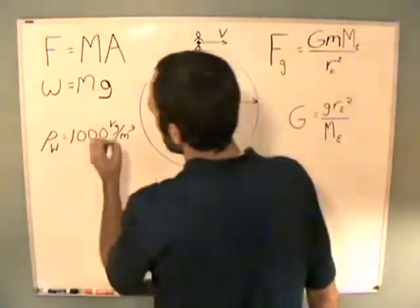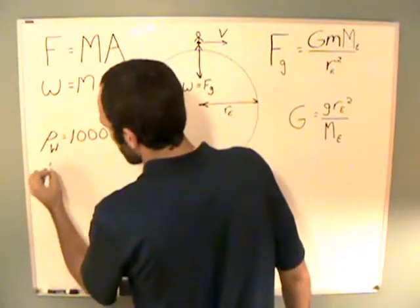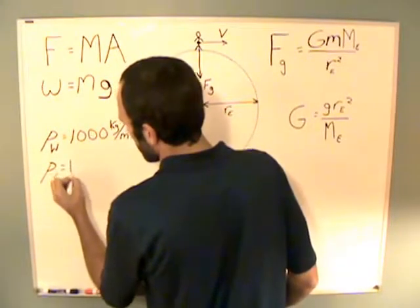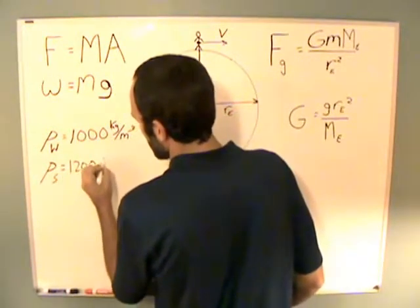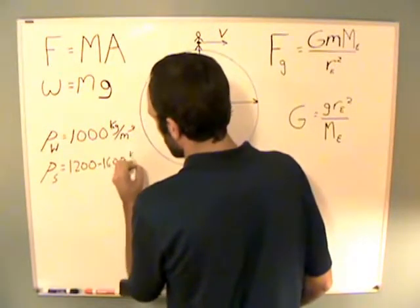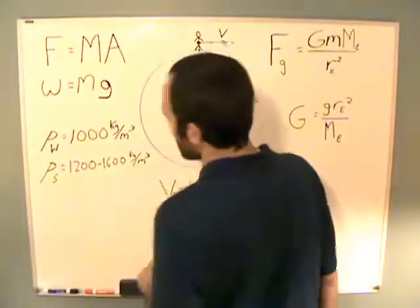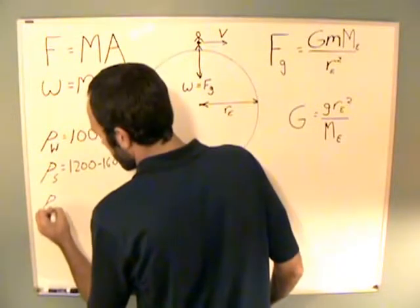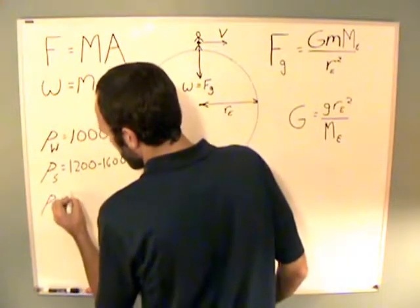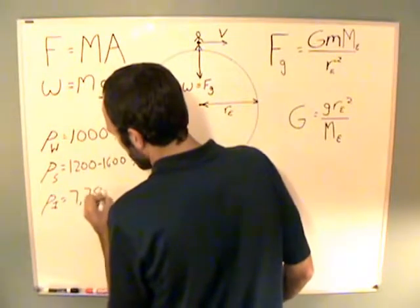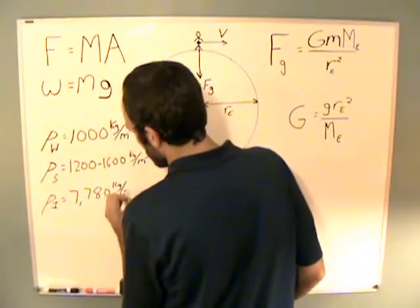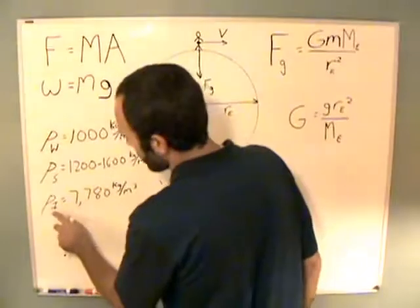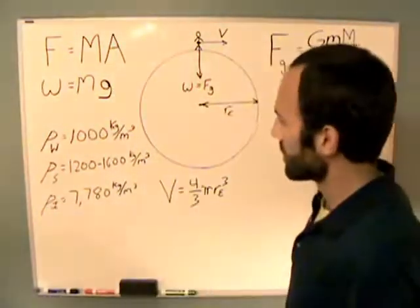You definitely know the density of water back then. You definitely know the density of sand and soils, which is roughly 1,200 to 1,600 kg per meter cubed. And they definitely knew the density of iron, because they were building things out of iron a long time before that. Rho I is equal to 7,780 kg per meter cubed. Now, whether they were using metric units again, I don't know, but they would have had their units that could be converted into the units I'm using now.